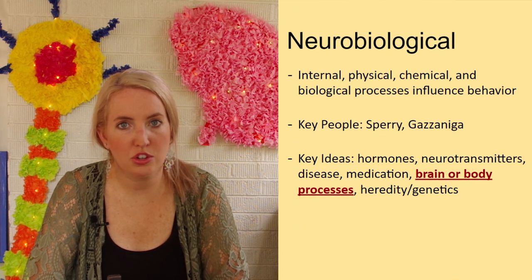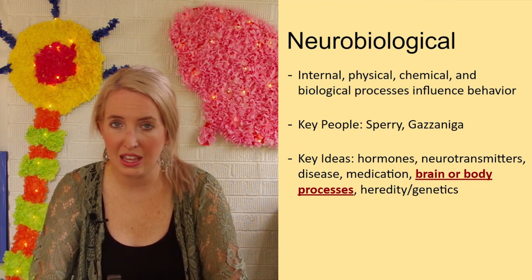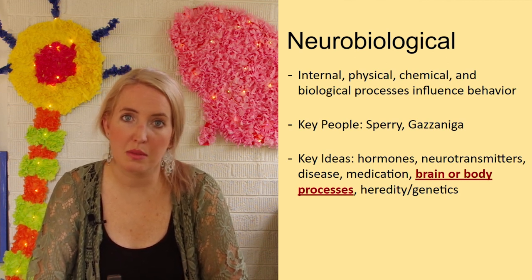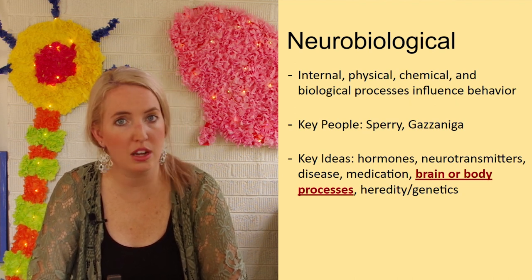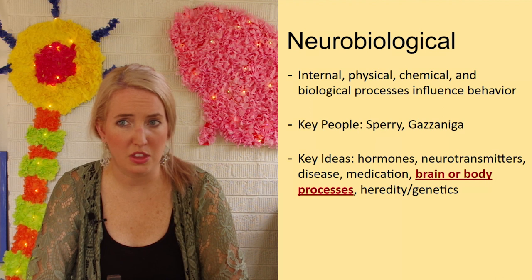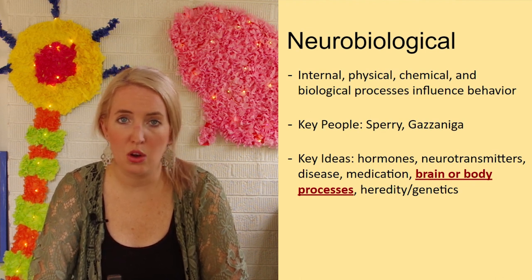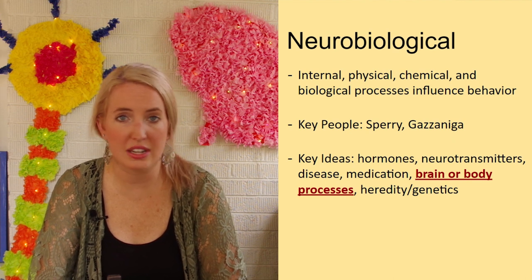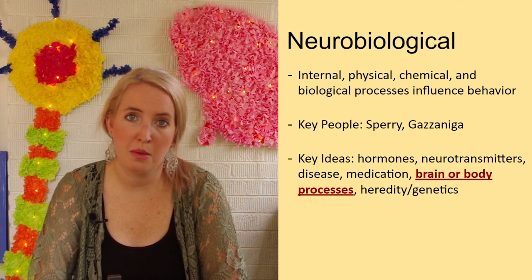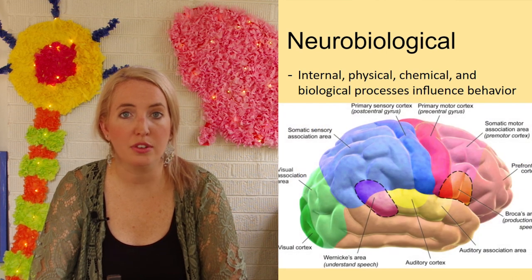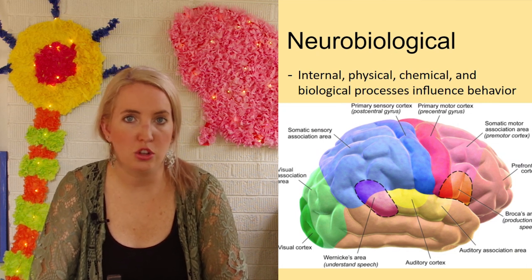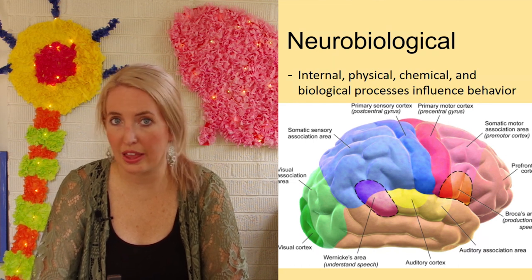The neurobiological approach is exactly what it sounds like — neuro meaning the brain, and biology meaning all physiological processes of our body. Neurobiological psychologists explain behavior by looking at changes in the brain or body systems — chemicals in the brain, hormones, how diseases affect behavior, and how heredity and genetics play a role in personality and temperament. For example, a neurobiological psychologist might approach depression by offering antidepressants to change the brain's chemical makeup.